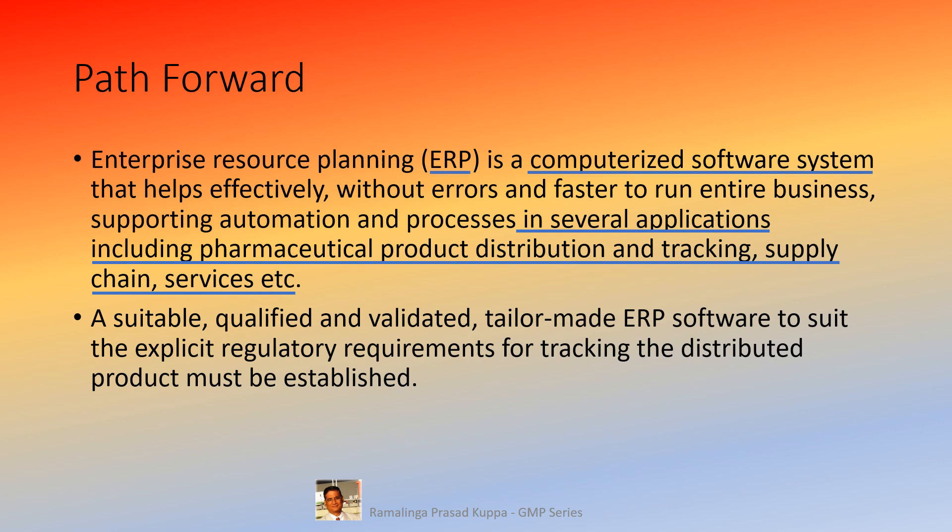Path forward: Enterprise Resource Planning (ERP) is a computerized software system that helps effectively, without errors and faster, to run the entire business — supporting automation and processes in several applications including pharmaceutical product distribution, tracking, and supply chain services. As explained previously, the ERP system will help to establish compliance to the regulatory requirement. A suitable, qualified, and validated tailor-made ERP software to suit the explicit regulatory requirements for tracking the distributed product must be established. The ERP system must be qualified and must comply with the requirements of 21 CFR Part 11 — the electronic records and electronic signatures. The qualification should be challenged with test scripts for the effective functioning of the system, tailor-made to suit the requirements of the individual organization.